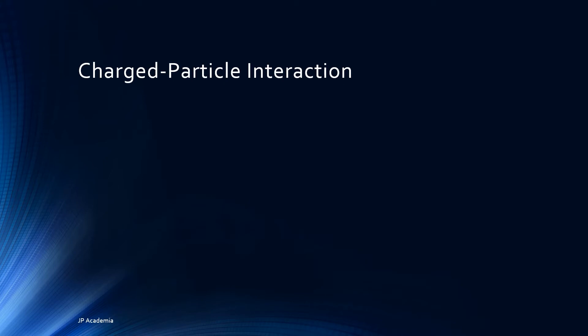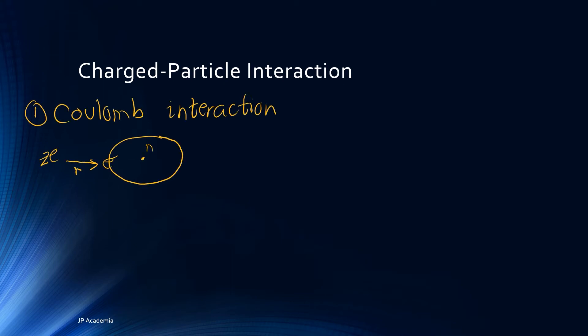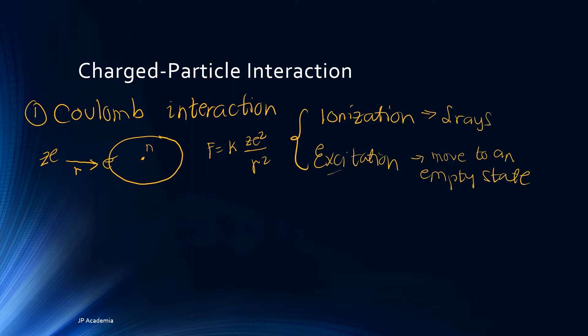A charged particle mainly interacts through Coulomb force interaction. For example, a negatively charged electron and a positive nucleus that constitutes the atoms of the material. Shown in the drawing is the Coulomb interactions with electrons and the nuclei. The force on the electron over a given time may result in the transfer of energy from the moving charged particle to the bound electron.